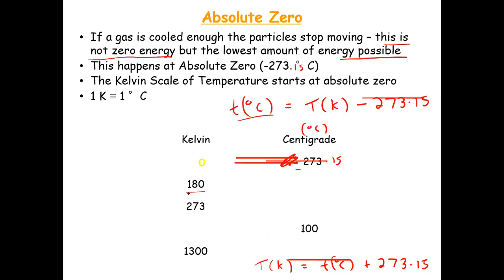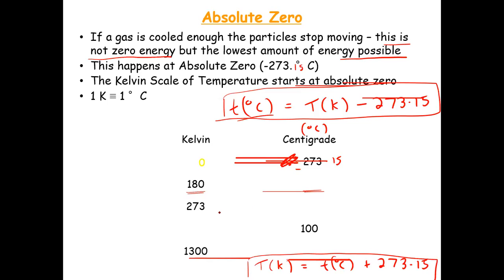Pause the video and try these conversions: 180 Kelvin to degrees Celsius; 273 Kelvin to degrees Celsius; 100 degrees Celsius to Kelvin; and 1300 Kelvin to degrees Celsius. The answers are minus 93, 0, 373, and 1027. Note: if you included the 0.15, your answer for the last one might be 1026.85.